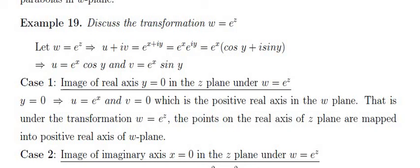Case 1: Image of the real axis y = 0 under w = e^z. Substituting y = 0: u = e^x and v = e^x · sin 0 = 0. Therefore v = 0, which is the positive real axis in the w-plane. So points on the real axis of the z-plane are mapped to the positive real axis of the w-plane.